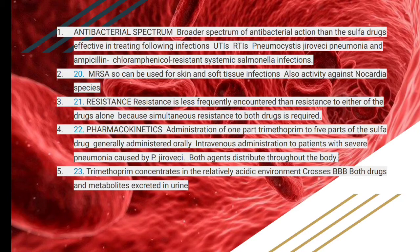The resistance pattern is almost the same as previously described. Pharmacokinetics: it is administered as one part trimethoprim to five parts sulfa drug, generally given orally. Intravenous administration is used for patients with severe pneumonia caused by Pneumocystis jirovecii. Both agents are distributed throughout the body. Trimethoprim concentrates in relatively acidic environments and crosses the blood-brain barrier. Both drugs are metabolized and excreted in the urine, so co-trimoxazole is strictly contraindicated in renal failure.